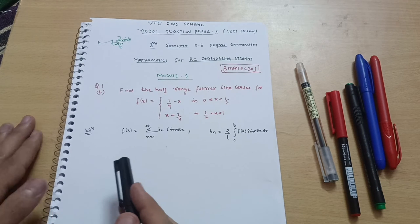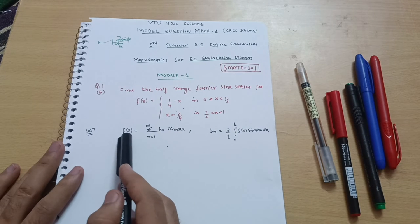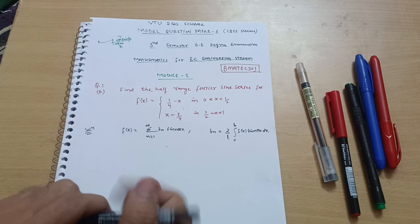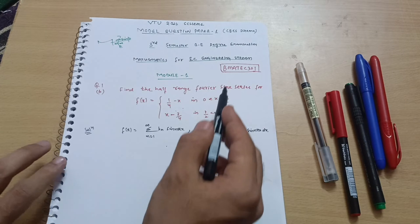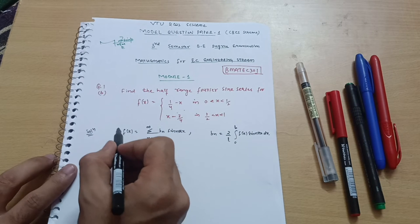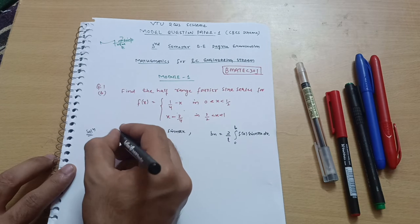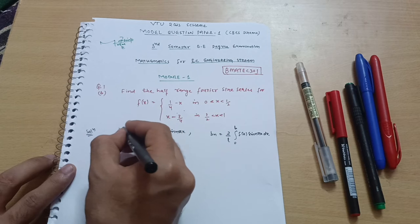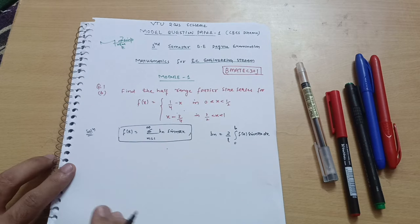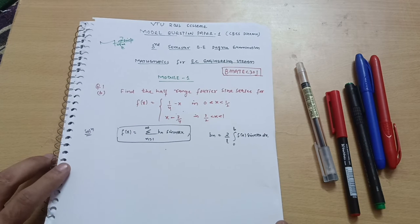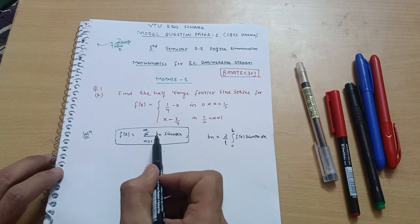For the half range Fourier sine series, the expansion is f(x) = summation from n=1 to infinity of b_n sin(nπx). This is the only formula for the half range Fourier sine series. You have to remember these formulas — write them on an A4 sheet and check daily so you will easily remember them. By practicing only, you can remember these formulas.